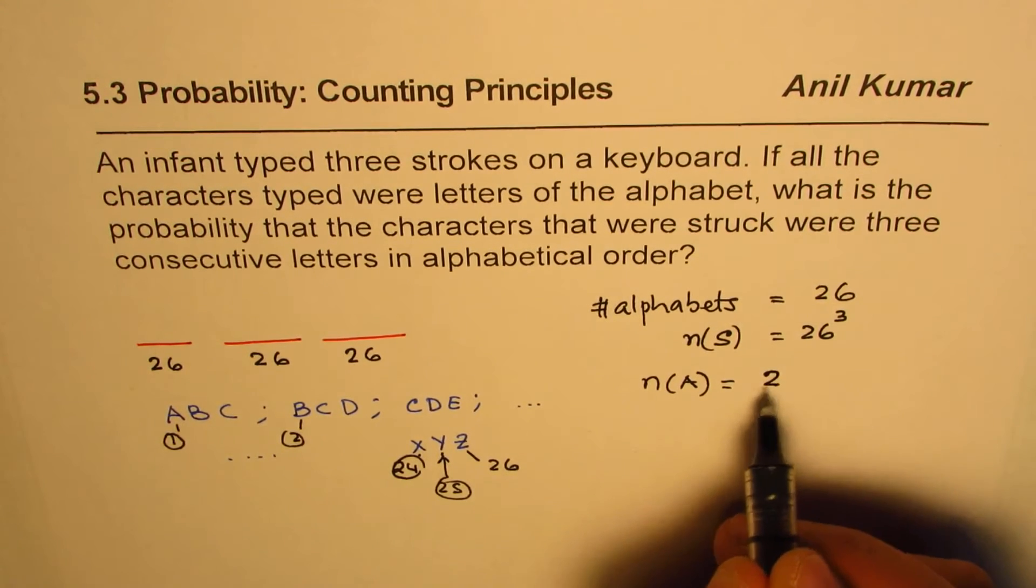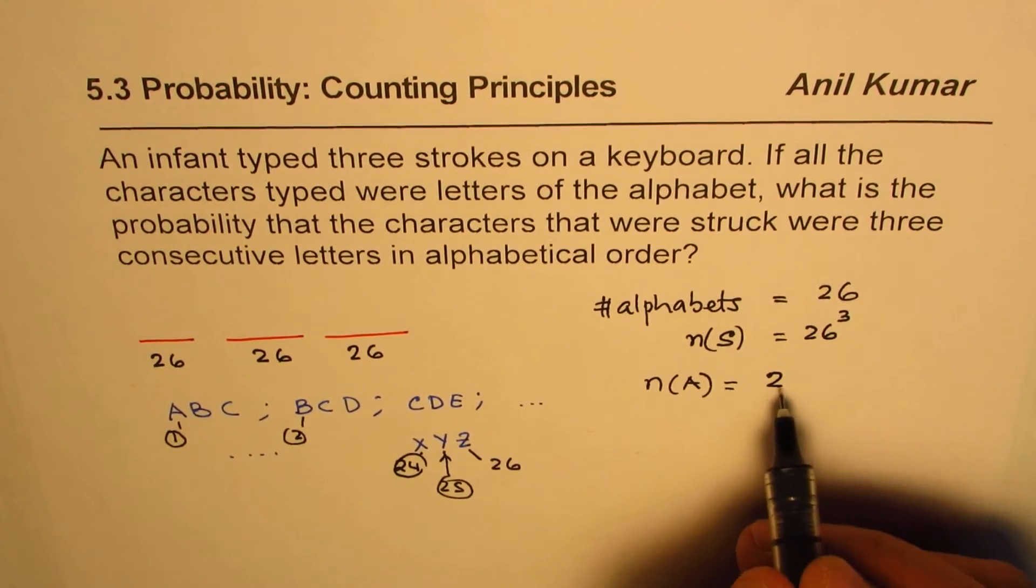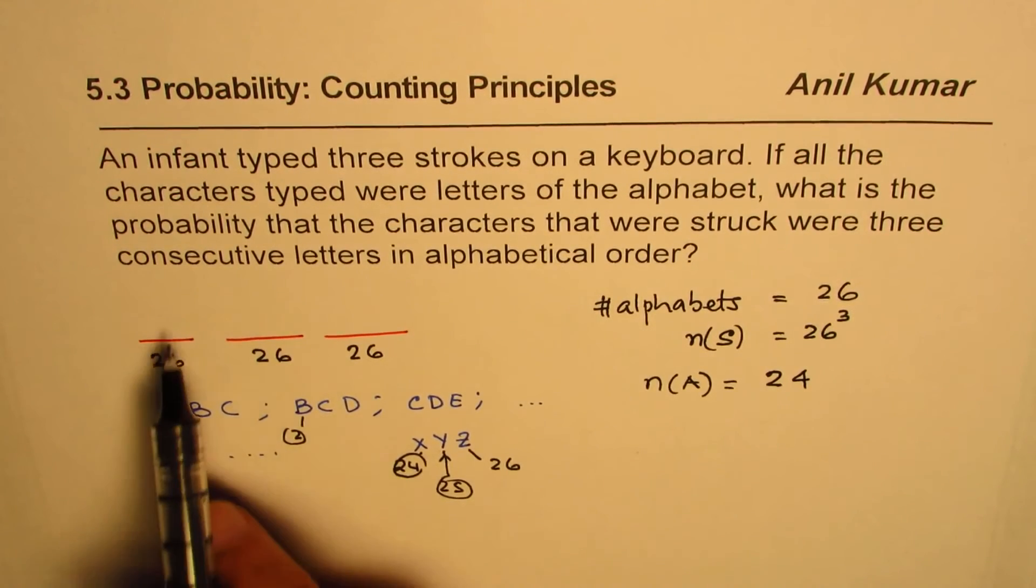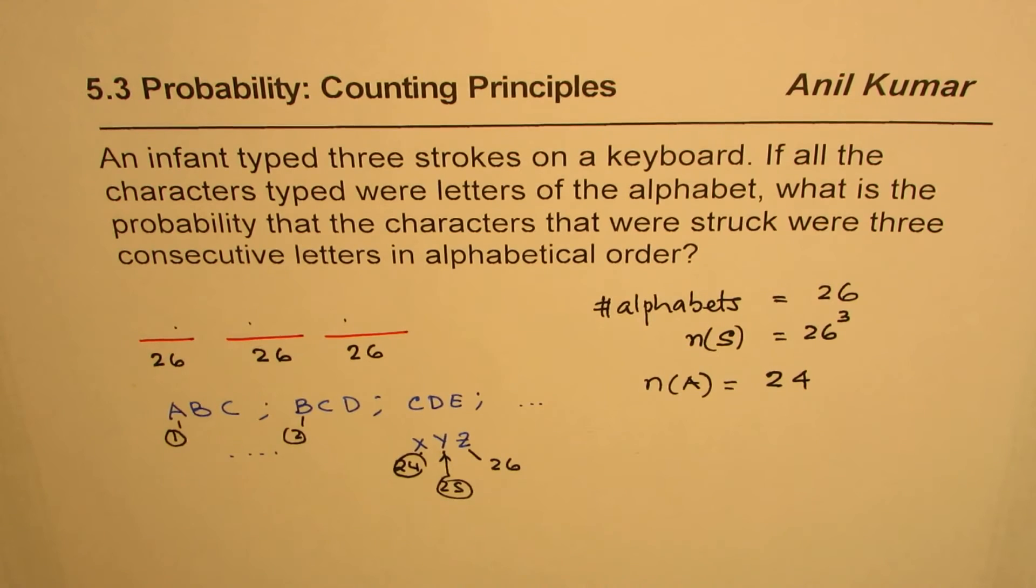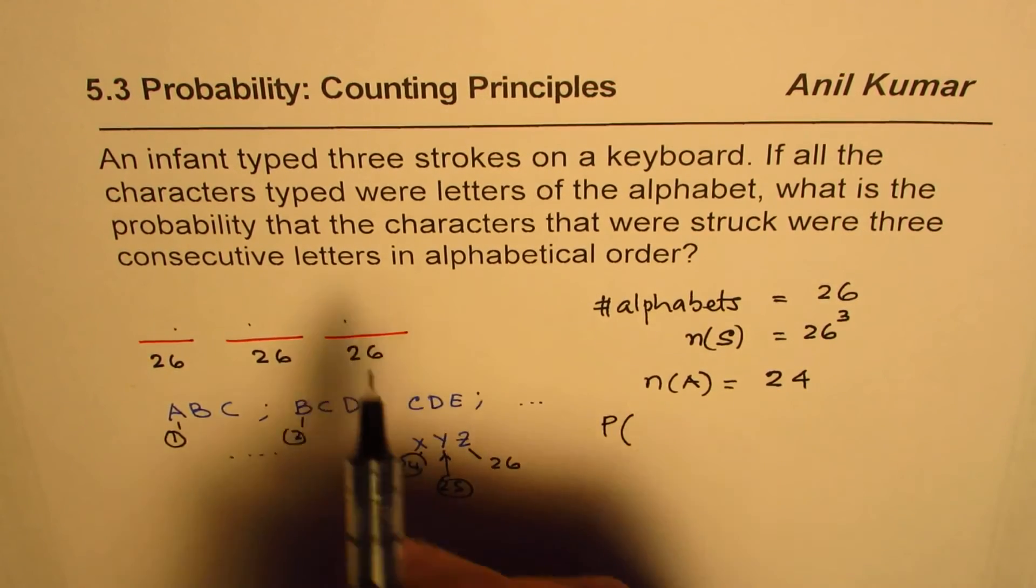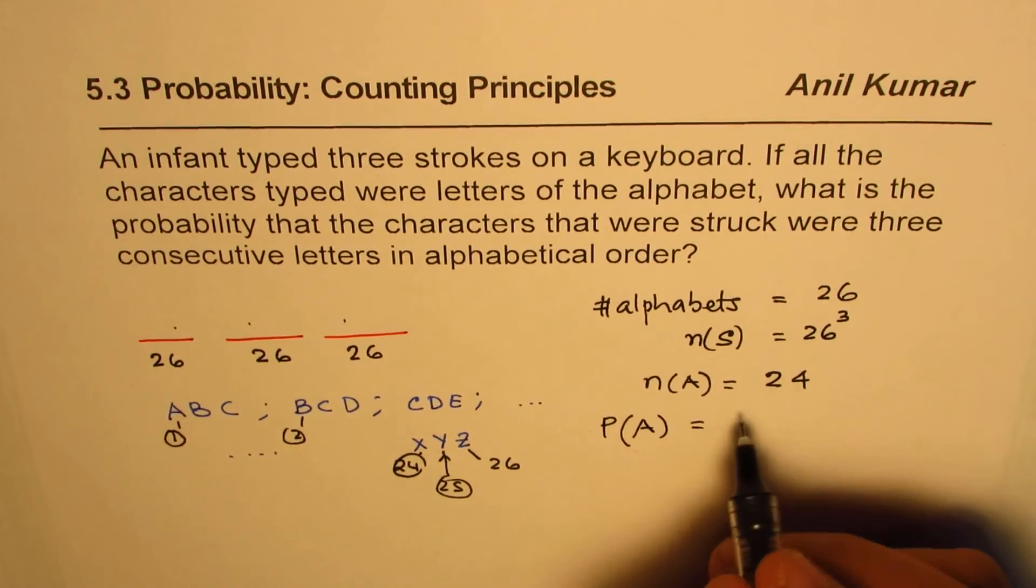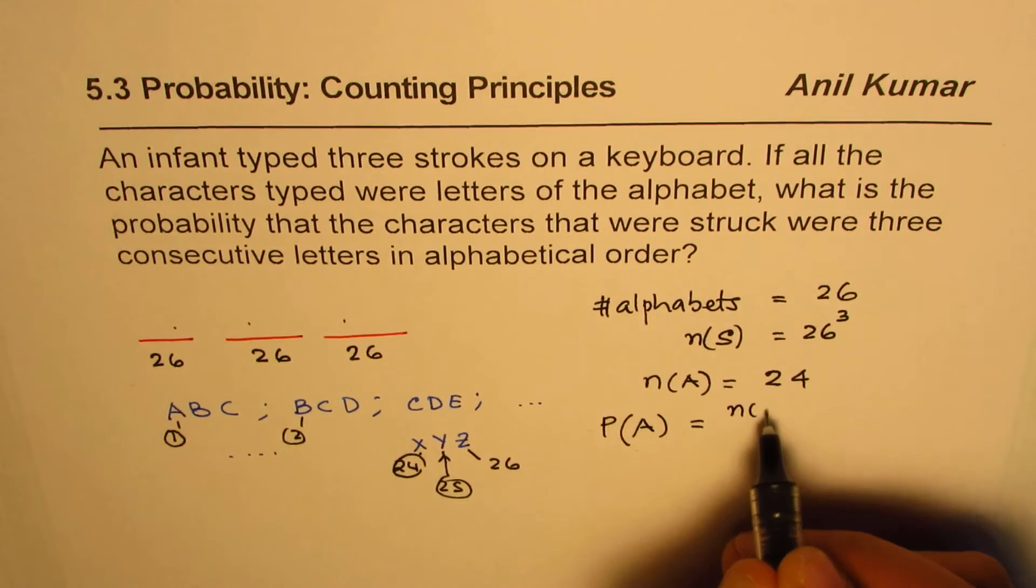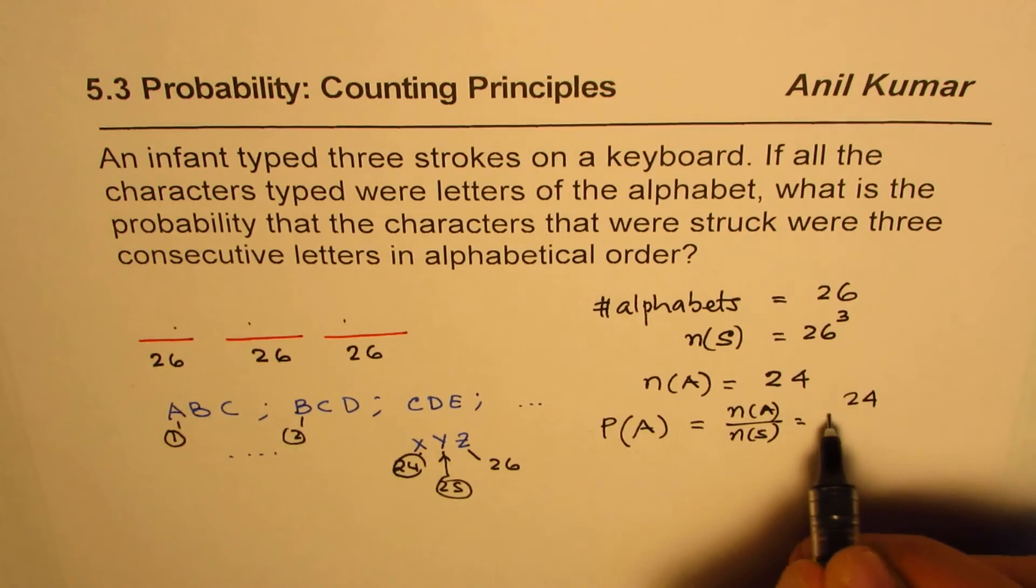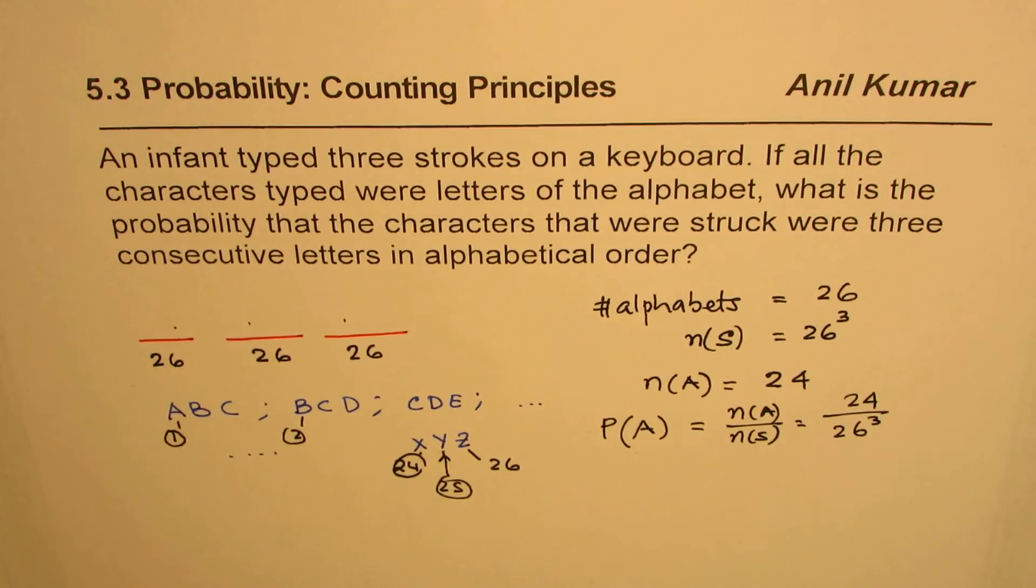And therefore, N of A is 24. We can write down the probability for getting three consecutive characters as equal to N of A over N of S, which is 24 over 26 to the power 3. So that is the answer for us.